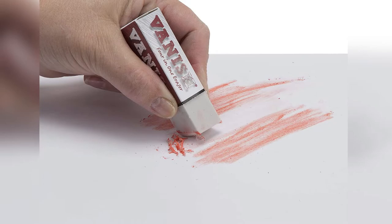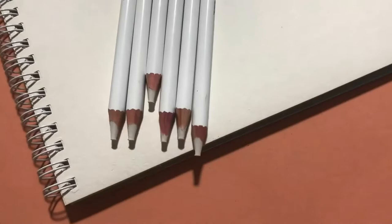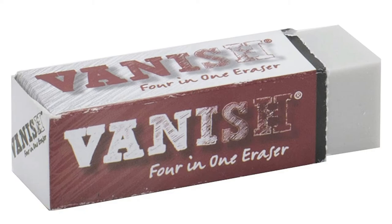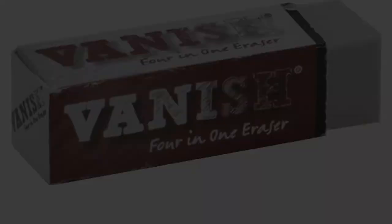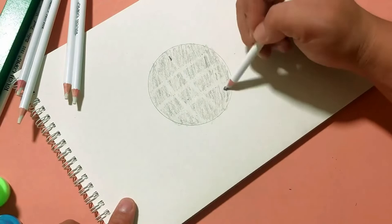Erases graphite, charcoal, and pastels. Instead of making crumbs, the Vanish rolls with the stroke leaving a nice clean strip at the end. Doesn't damage expensive paper, doesn't smear graphite, and can even erase lines under ink. Consumers are ecstatic about the gentleness of this eraser. It doesn't even damage tissue. Artists want to repurchase this product.